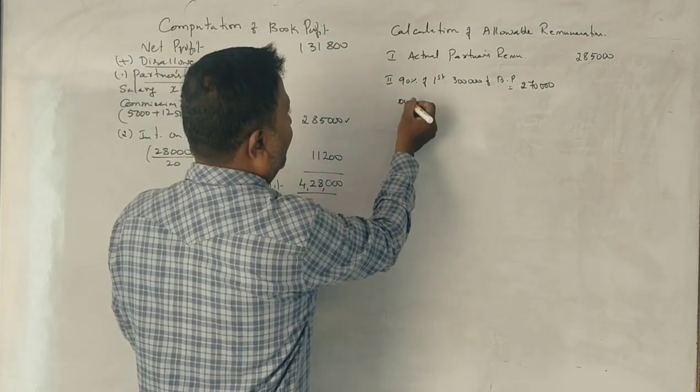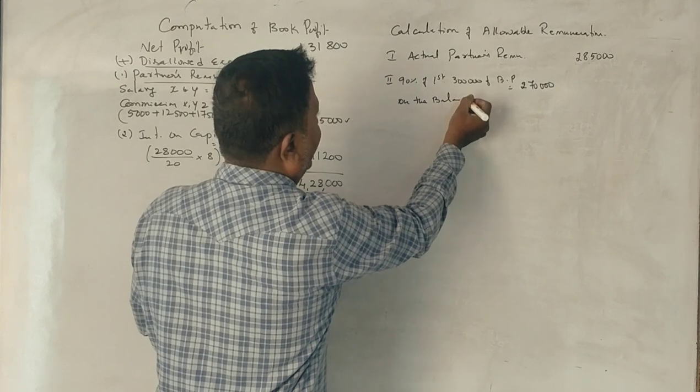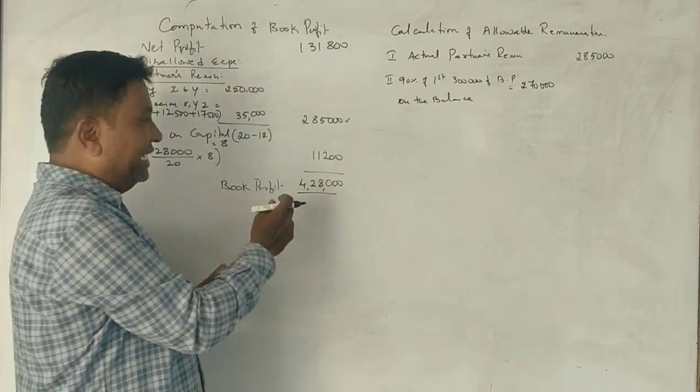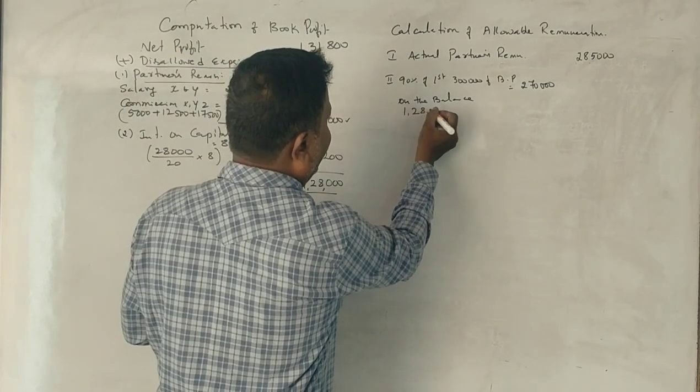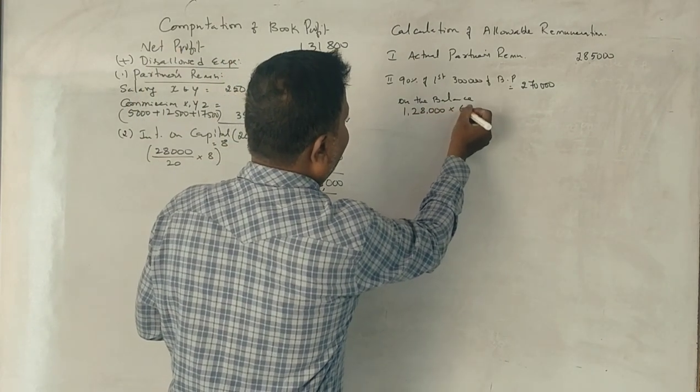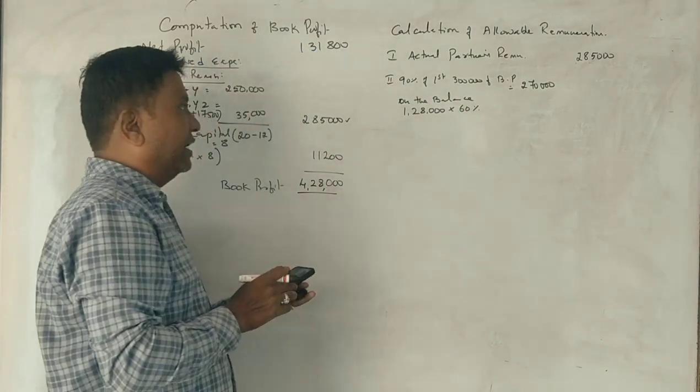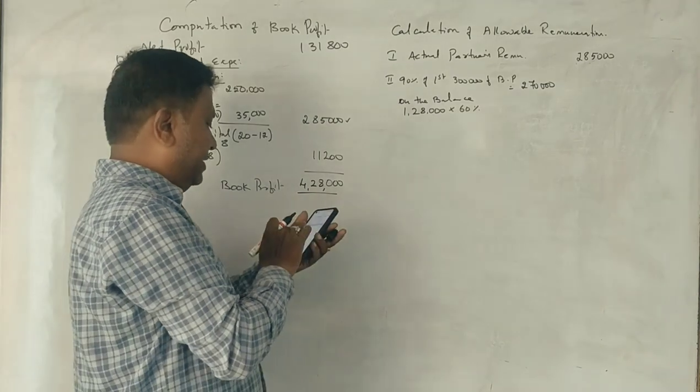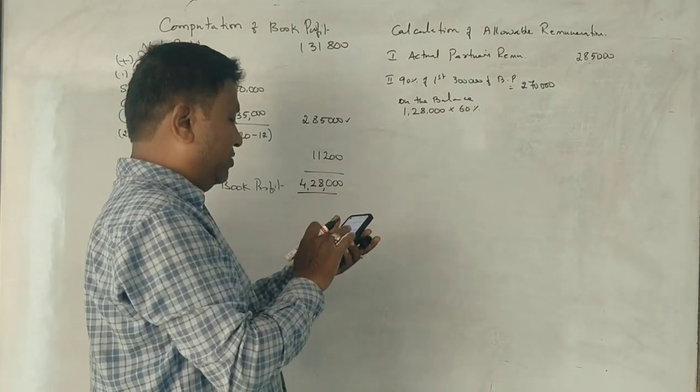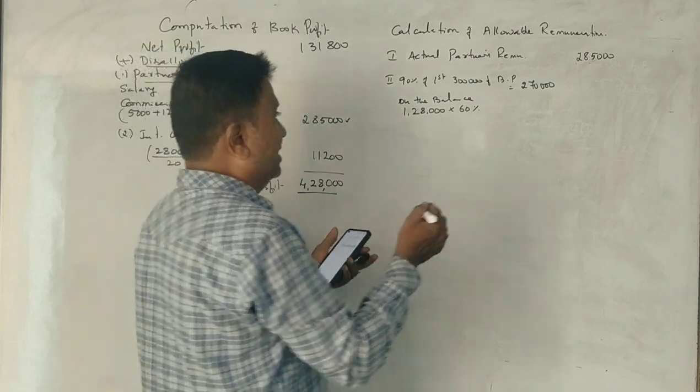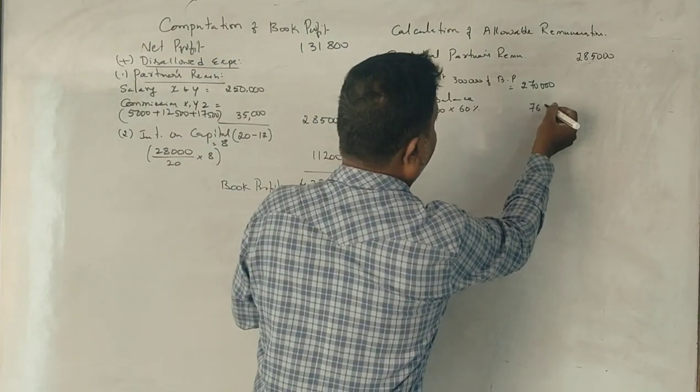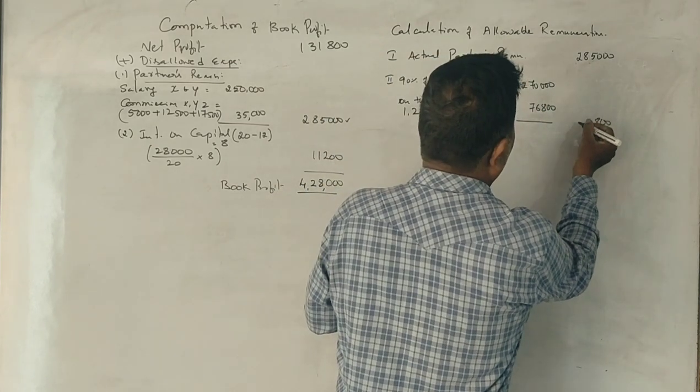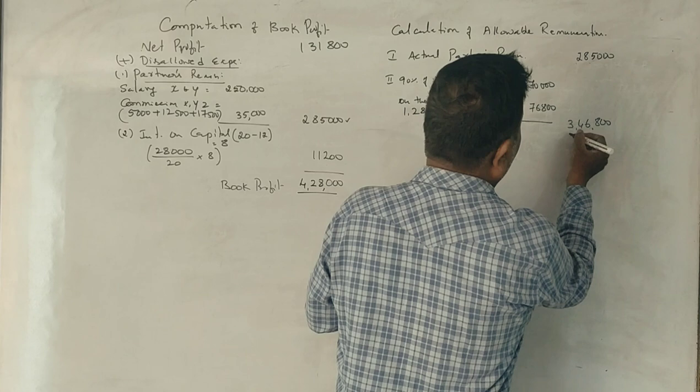On the balance, total book profit is Rs. 4,28,000. Otherwise, Rs. 3,00,000 minus Rs. 1,28,000, 60%, Rs. 76,800. The total amount is Rs. 3,46,000.